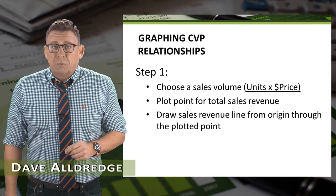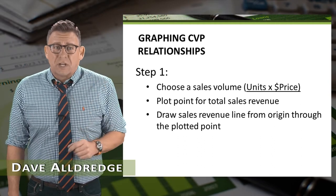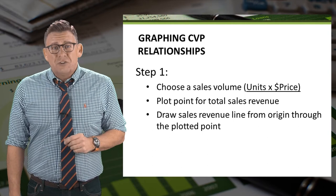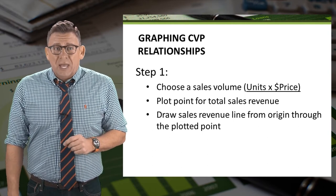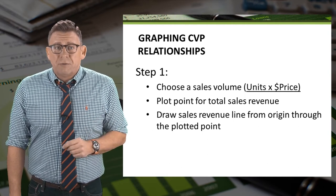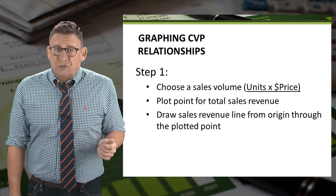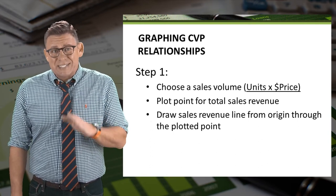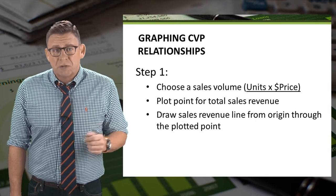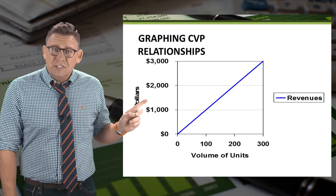Graphing the cost-volume-profit relationship is a five-step process. In step one, we need to choose a sales volume and plot that on our graph. The line will start at the origin because price times zero quantity sold is zero. So graphically it looks like this.